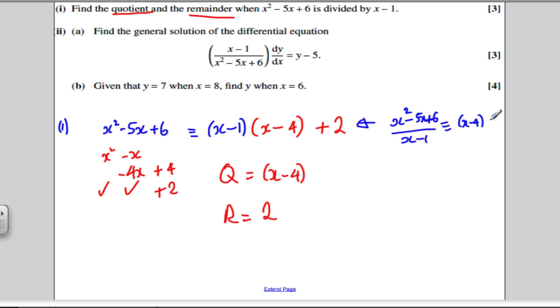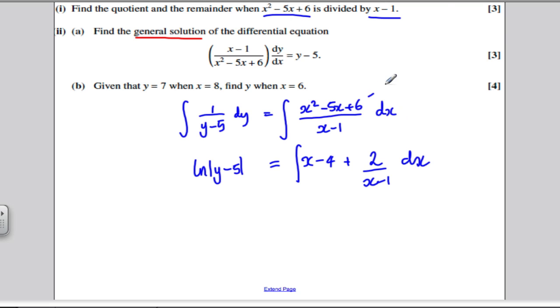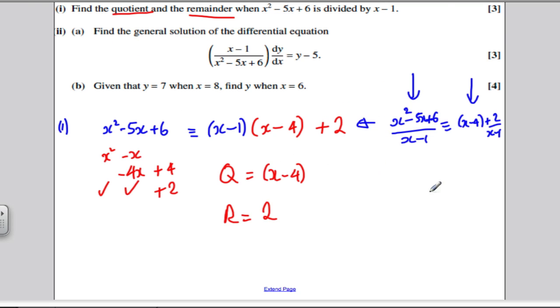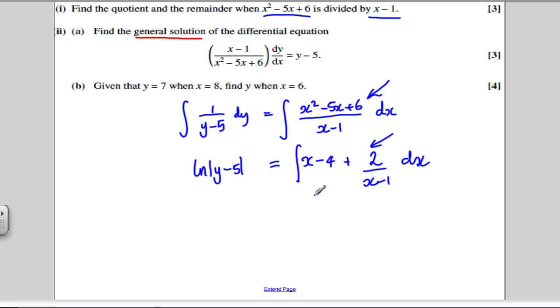And on this side, you would get x minus 4 plus 2 over x minus 1. So this thing here is the same as this. So when I'm trying to integrate this, I can instead integrate this from here.